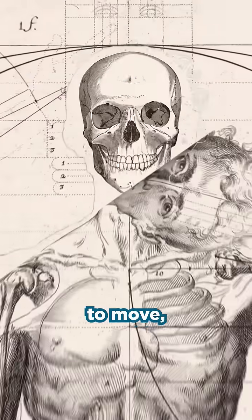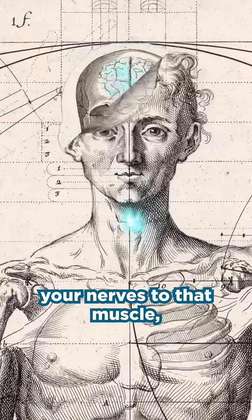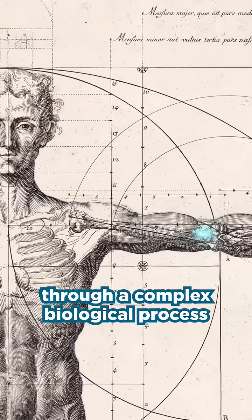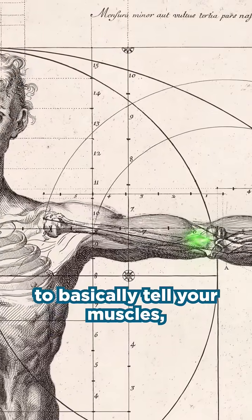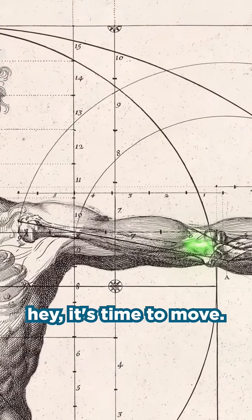Well, when you want your muscle to move, your brain sends a signal down your nerves to that muscle, and that signal goes through a complex biological process to basically tell your muscles, hey, it's time to move.